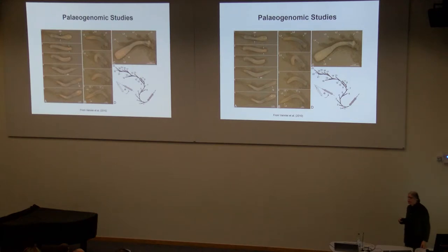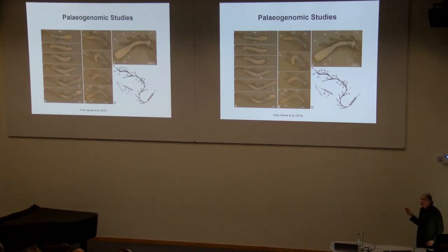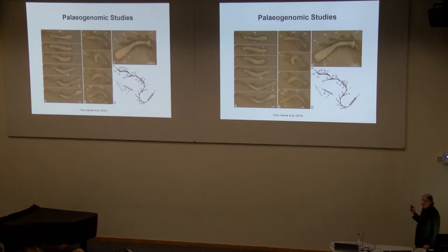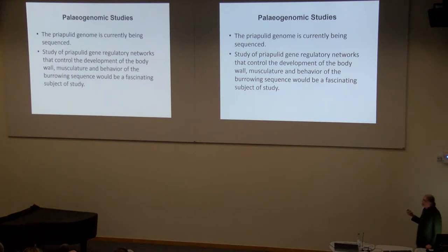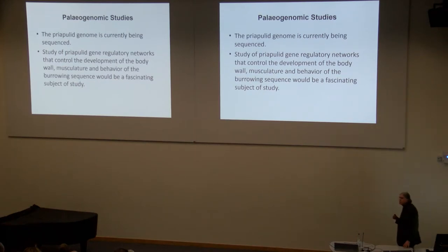So how will we approach paleogenomics studies of this? We know there is a very stereotypical bioturbation pattern for priapulids, as Vanier et al. have shown — both morphologically and behaviorally they seem pretty similar to what we find in the early Cambrian. Paleogenomic studies of priapulids would be very worthwhile for understanding this geobiological change. The priapulid genome is currently being sequenced, and additional work on understanding the GRNs that lead to this behavior would be really illuminating.